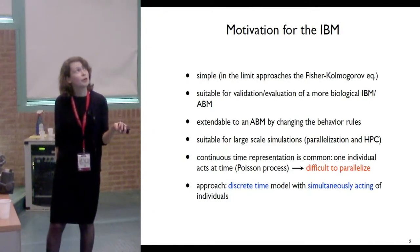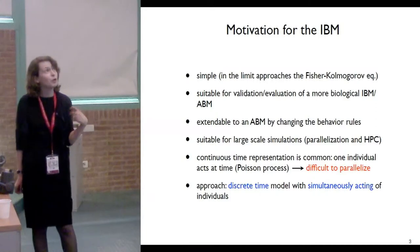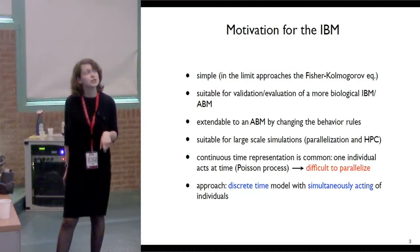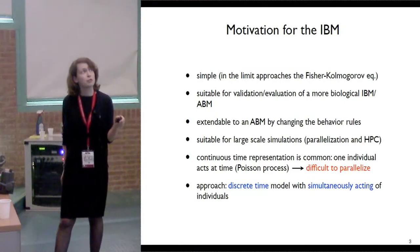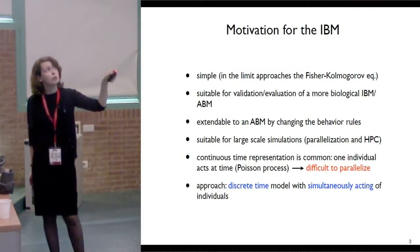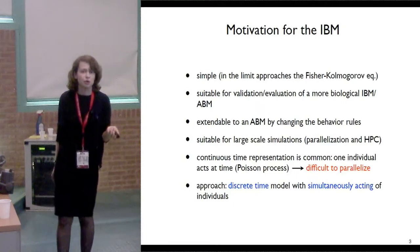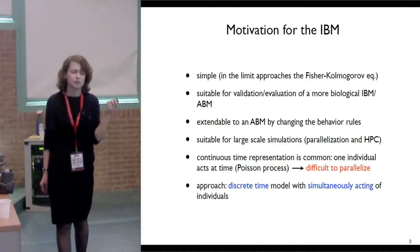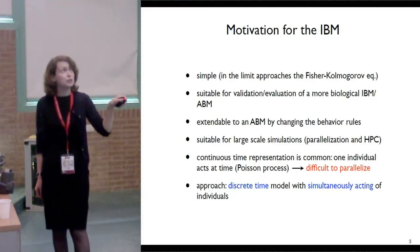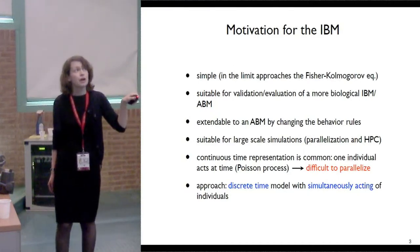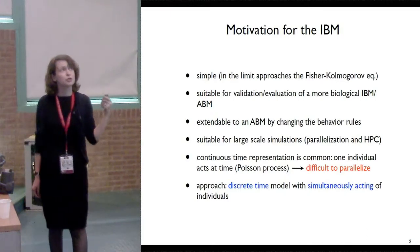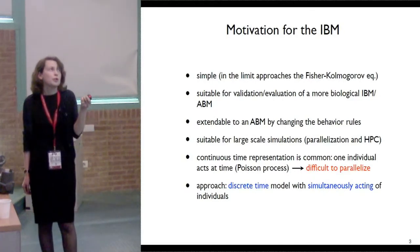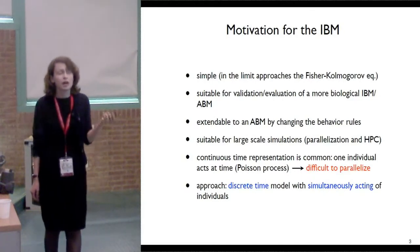We would like to have a model that can be extended to a full IBM or to a modified IBM, and a very important point is that we would like to have a model which is suitable for large-scale simulation, so that we could parallelize and use high-performance computing. However, these simple models are usually defined in terms of continuous time or one-step process, so in continuous time only one individual acts at a time, and we can speak of this process as a Poisson one. These continuous time models are difficult to parallelize since everybody has to wait for the action of one individual. Therefore, we propose here a discrete time model with simultaneous acting of individuals.